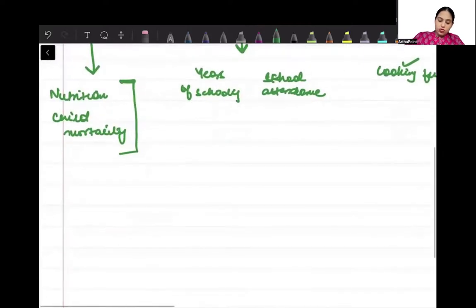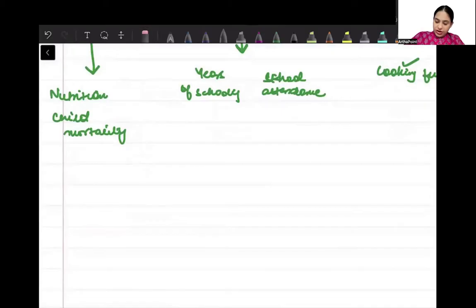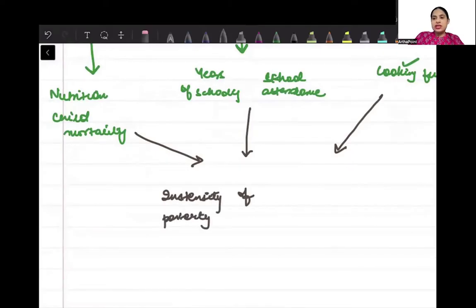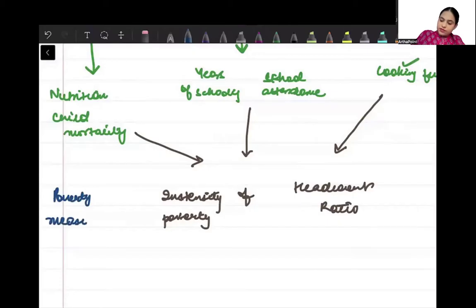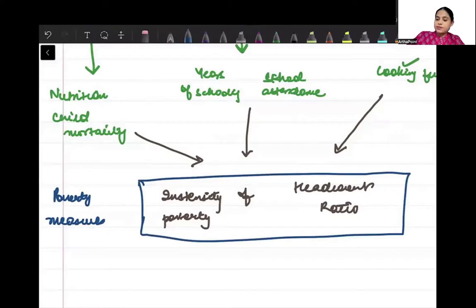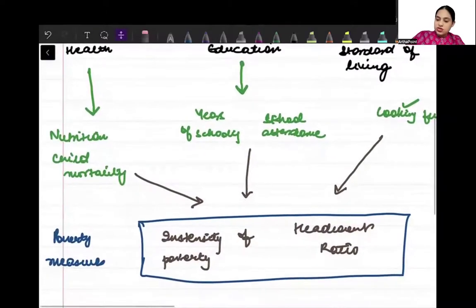Now when we look at these indicators, we have two different values of poverty measures. One is intensity of poverty, and the other measure which we can find out is called headcount ratio. These are the two poverty measures that we can find using these indicators.